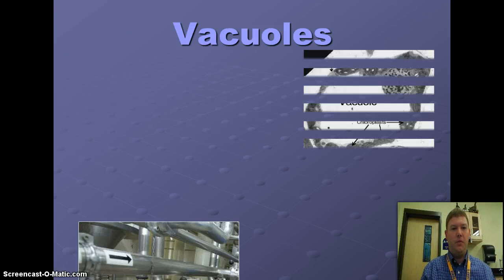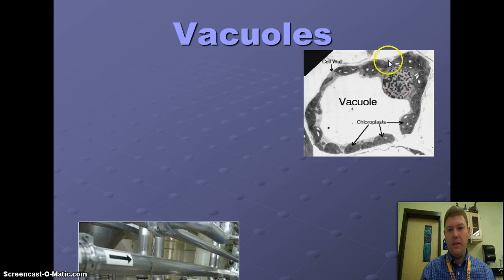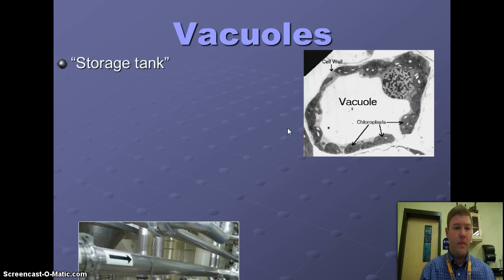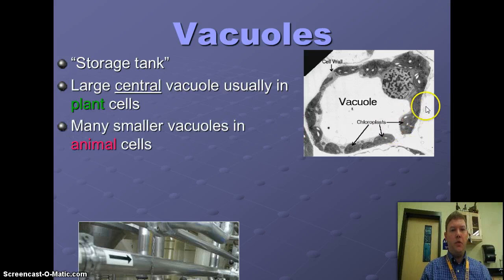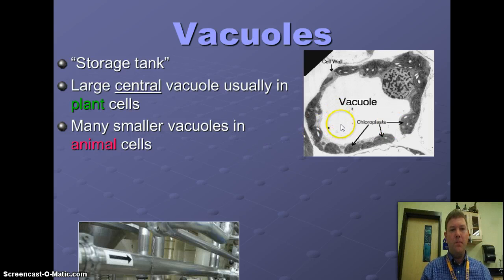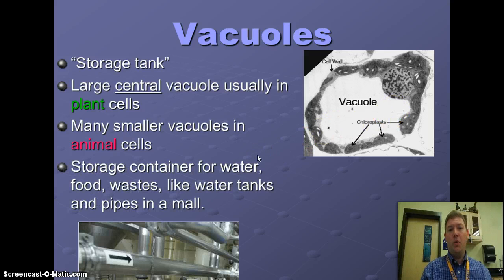Vacuoles — what's the main purpose of these? Here's a great example where you can see the cell wall going around and here is the vacuole — it's pretty large. It's the storage tank of the cell. There's usually a large central vacuole in plant cells, but in animal cells it's really small and there are a bunch of small vacuoles spread out. They are the storage container for water, food, and waste — think of it like the water tanks and pipes throughout the mall.